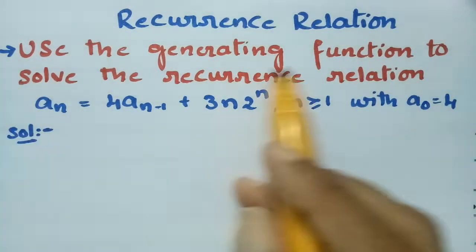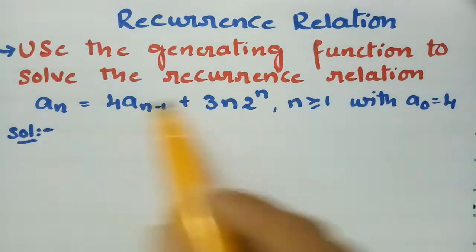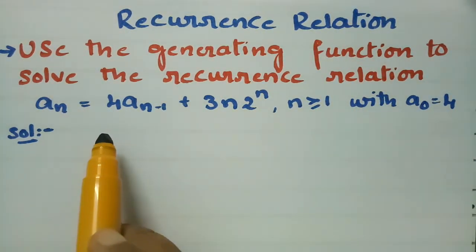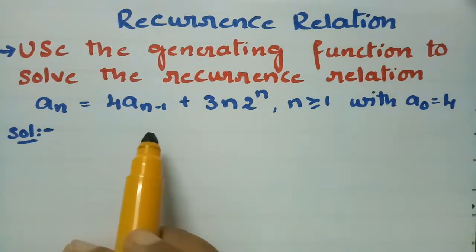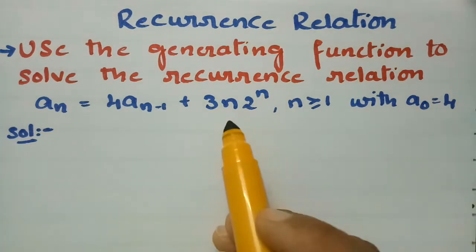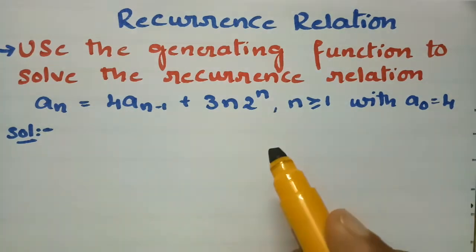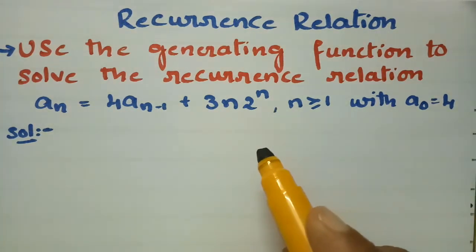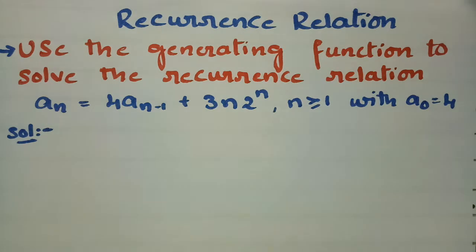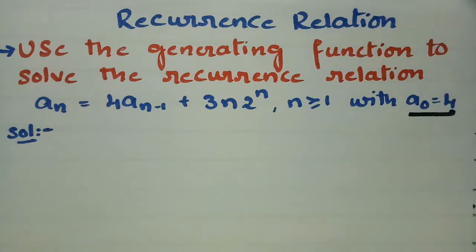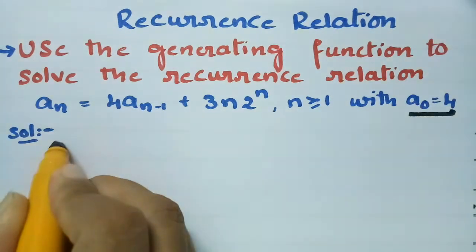Use the generating function to solve the recurrence relation: a_n = 4·a_(n-1) + 3n·2^n, where n ≥ 1, with the initial condition a_0 = 4. Let's get started to solve.